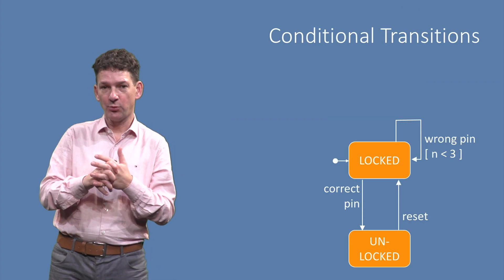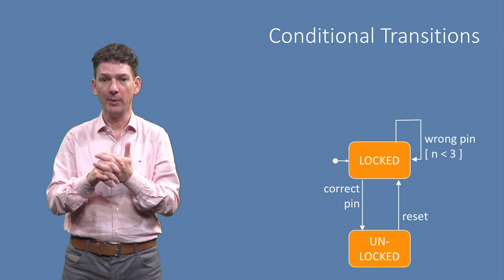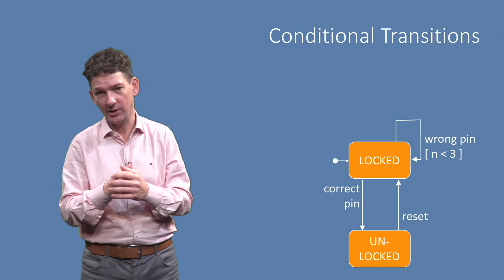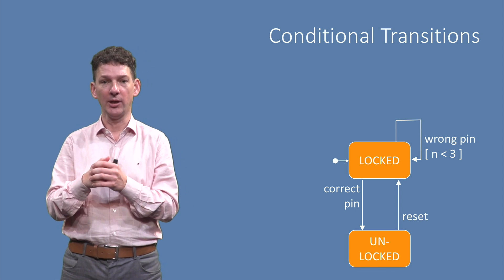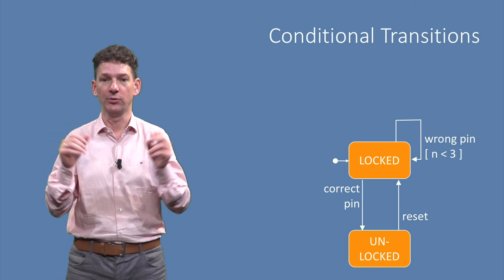The notation that we are using here is that of the Unified Modeling Language, the UML. The UML supports various diagram types, and one of which is the state diagram that we are using here. This notation also supports conditional transitions.